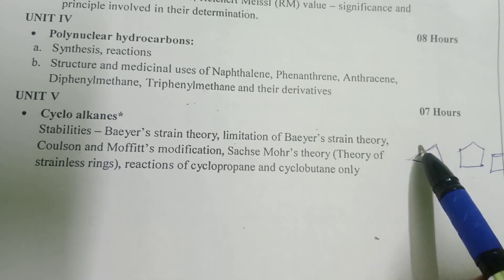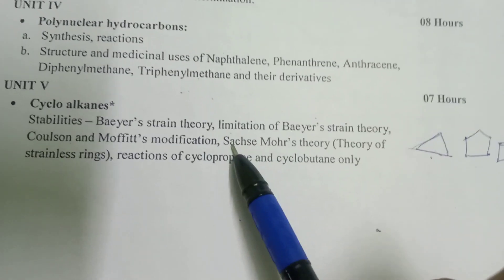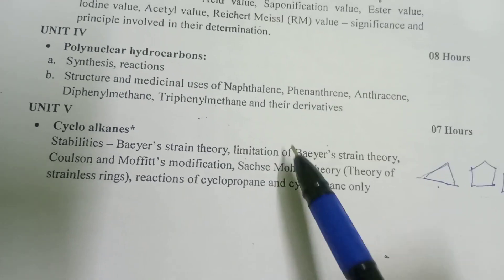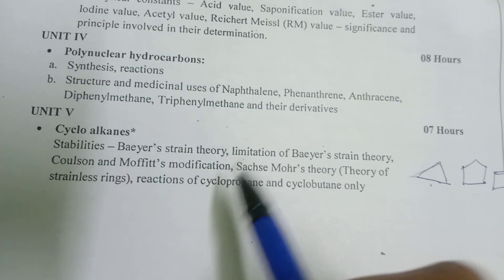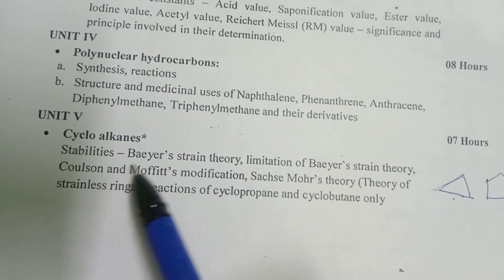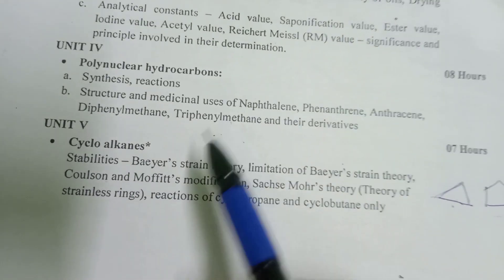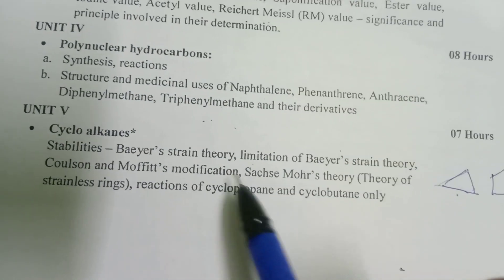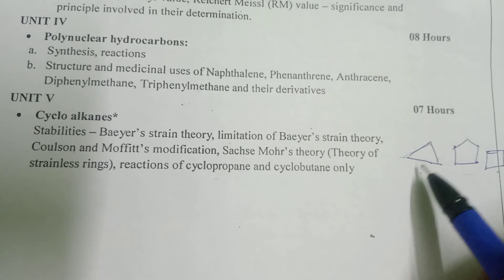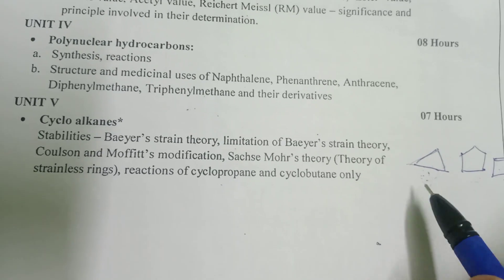The chair form and boat form of cyclohexane. This is the Sachse-Mohr theory. There is also torsional strain. The Coulson and Moffitt theory covers the banana bond. Let's check that in the video. The Coulson and Moffitt theory is very important — these are three theories we will try to cover. One question is on the reactions of cyclopropane and cyclobutane — this is how they react.